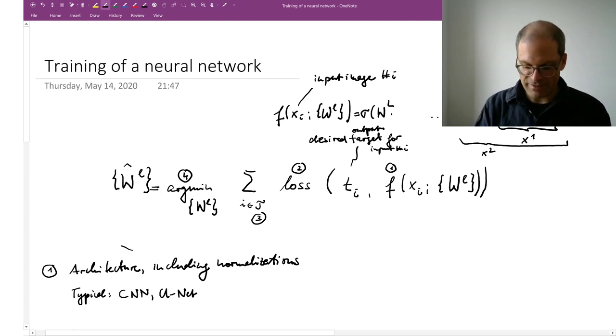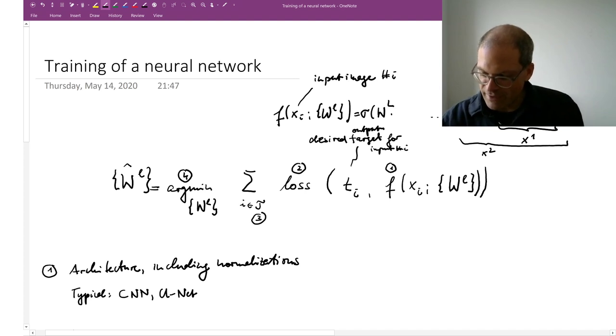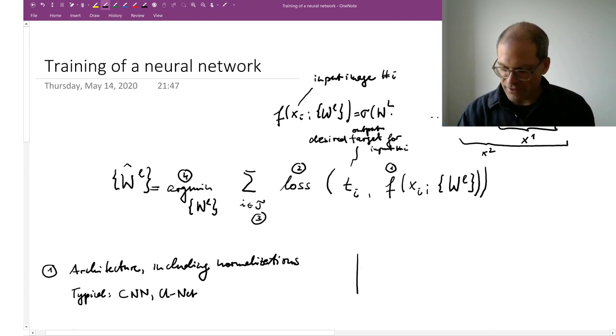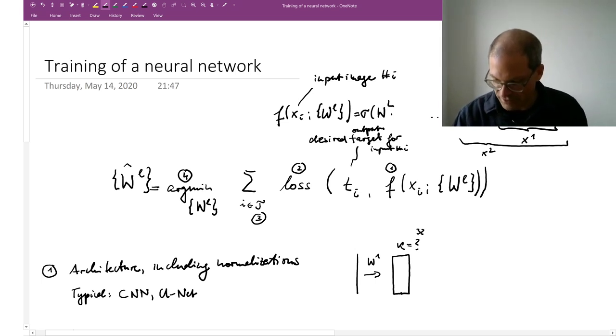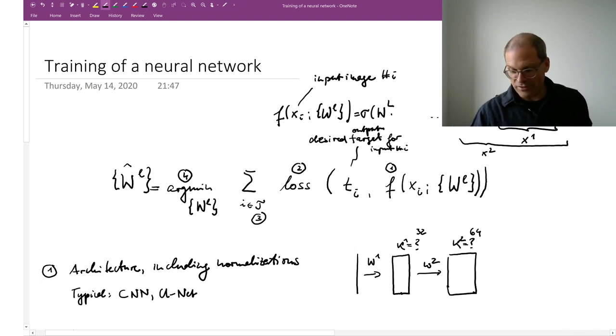First, when we say we compute this function f, the obvious choice that we have to make is what's the architecture. In particular, an important choice is what are the dimensions of these matrices W. Here's my input image, and then I'm going to transform it linearly and I'm going to get a stack of activation maps of features. K is what? Should it be 32 maybe? But then I have W_2, and now here I could say K_1 is 32. Now the question is, well, what is K_2? Is it 64 or is it also 32 or what is it?